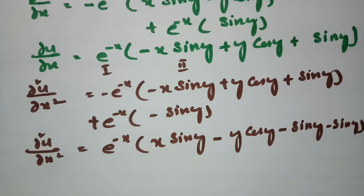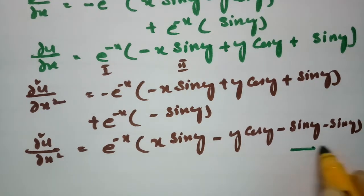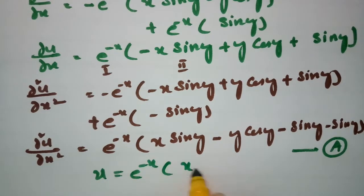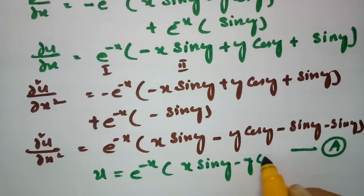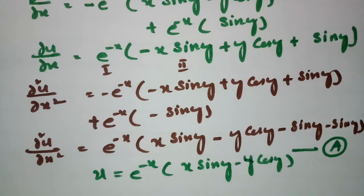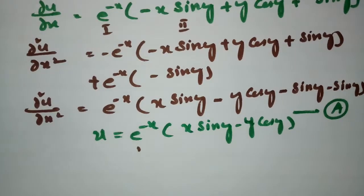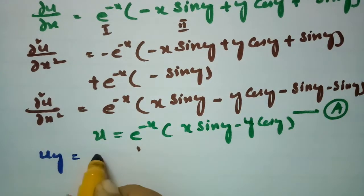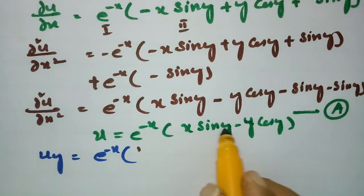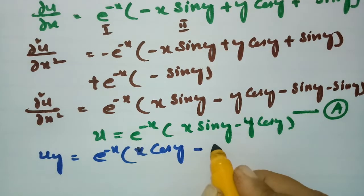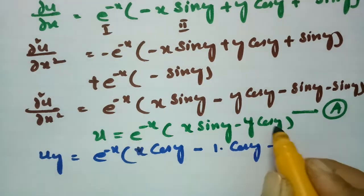Now u is e^(−x)(x·sin(y) − y·cos(y)). If I make a derivative with respect to y: ∂u/∂y = e^(−x) times [x·cos(y) + (−1)·cos(y) + y·sin(y)], since for x·sin(y) the derivative is x·cos(y), and for −y·cos(y) using the product rule gives −cos(y) + y·sin(y).